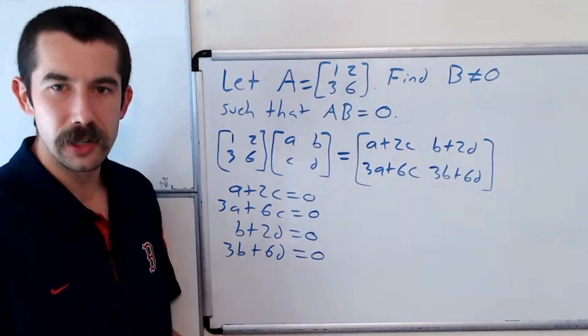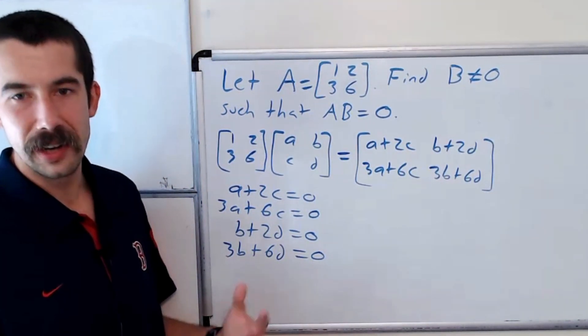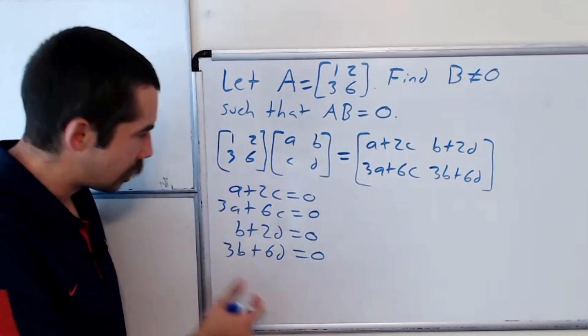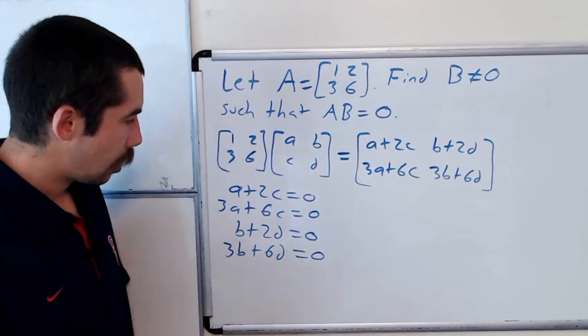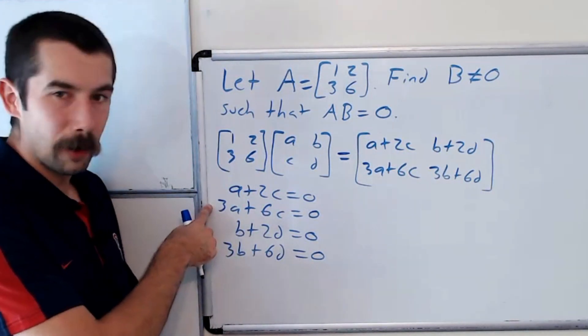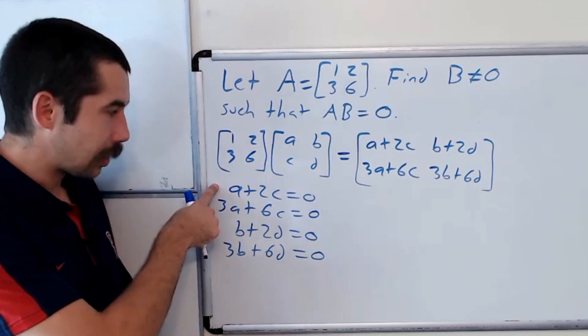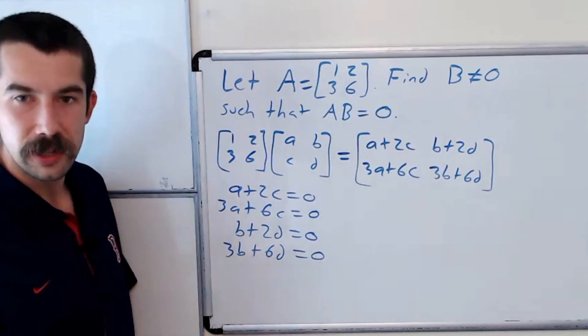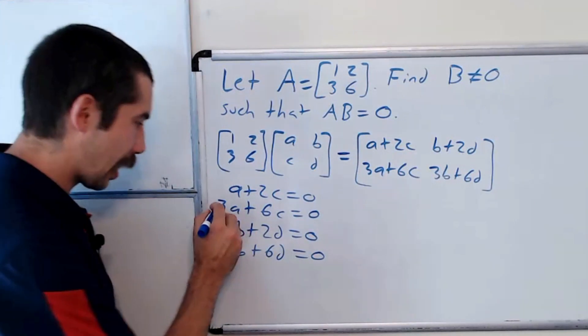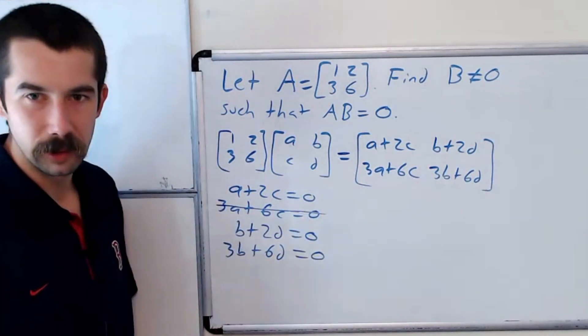And so we want to solve this system of equations and see if we can find a non-trivial solution to this system. But you can see that this second equation is exactly 3 times this first equation. So it gives us no new information. So we can just cross it out. Don't worry about it.